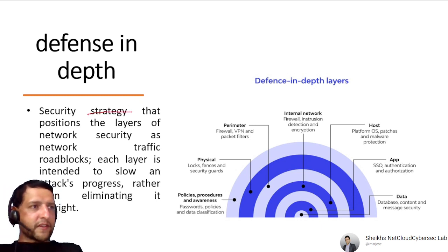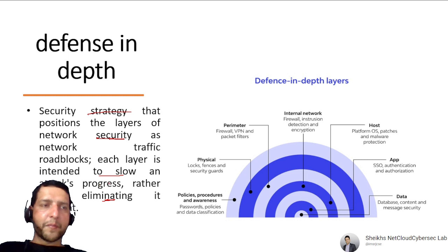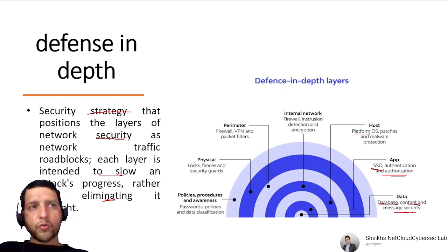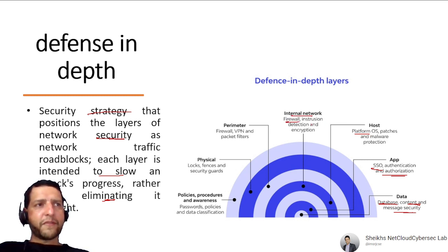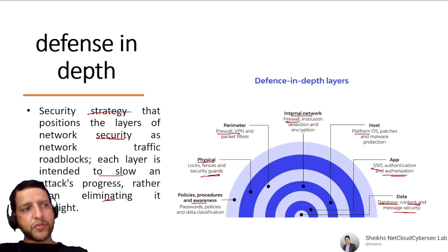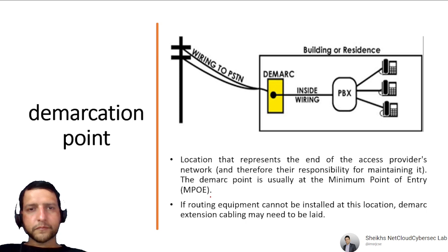Defense in Depth is a layered security strategy that positions multiple layers of network security as traffic roadblocks, each intended to slow an attacker's progress. Layers include: data layer (database security, content/message security), application layer (SSO, authentication/authorization), host layer (updates, patching), internal network (firewalls, IDS/IPS), perimeter (firewalls, VPNs), physical layer (locks, fences, guards), and policies/procedures (strong policies). Multiple layers of security working together.